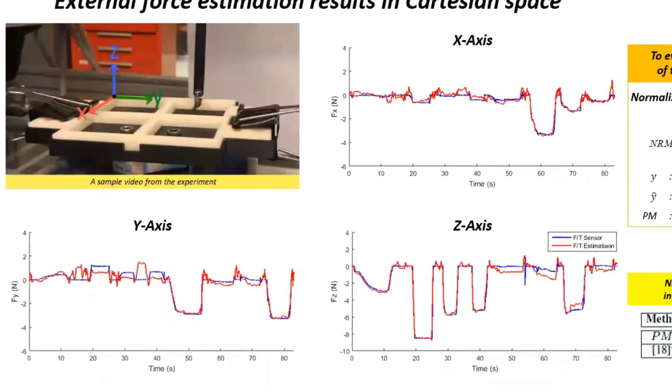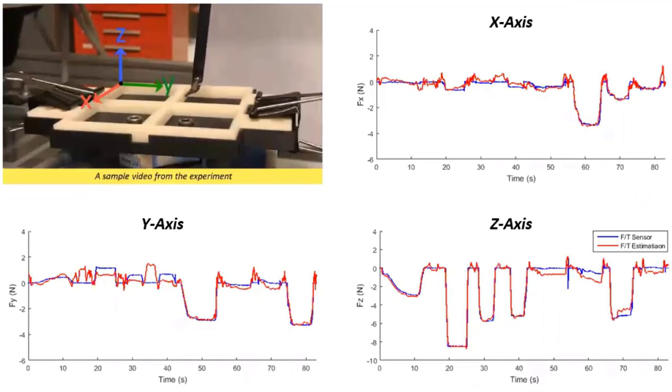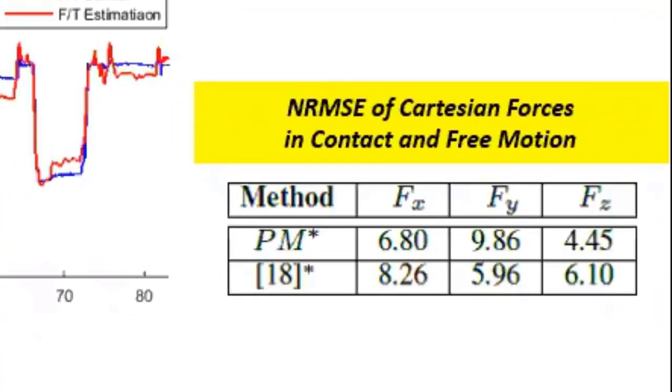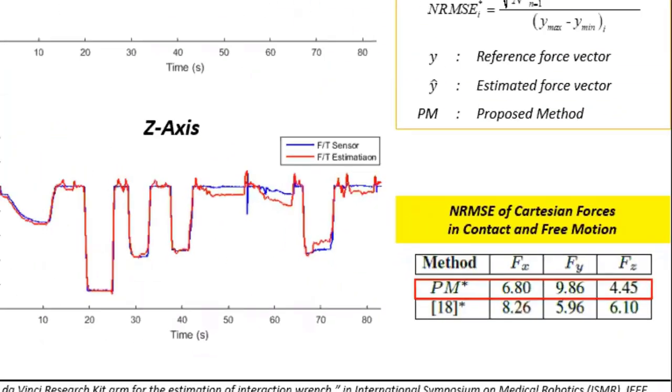In these plots, the blue line shows the sensor output, whereas the red line represents the estimation results. When there is contact with the sensor, it can be observed that estimation results of each axis are in agreement with the sensor output and estimation error is less than 10% in each axis. As can be seen from the table, our results are comparable with the results in the literature.